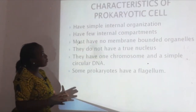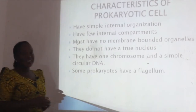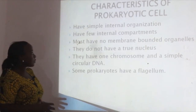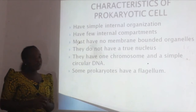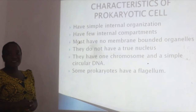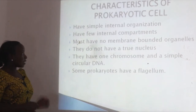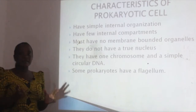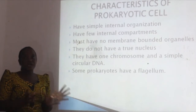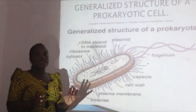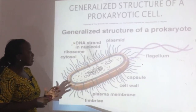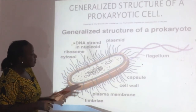The susceptibility of bacteria to antibiotics often depends on the structure of their cell walls. Characteristics of prokaryotic cells: they have simple internal organization and few internal compartments. Most prokaryotes have non-membrane-bound organelles and do not have a true nucleus. They have one chromosome and a simple circular DNA. Some prokaryotes also have flagella. The generalized structure of a prokaryotic cell includes structures such as flagella, the capsule, and the cell wall.